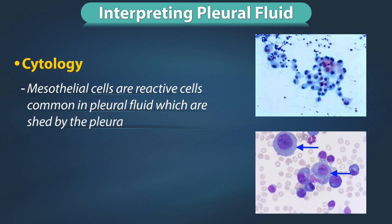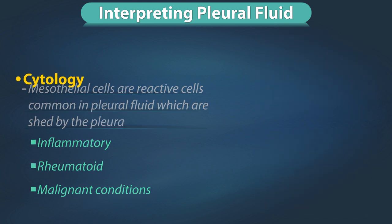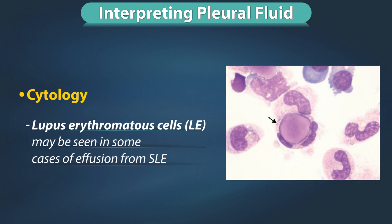RBC count more than 1 lakh per microliter is suggestive of malignancy, trauma, or pulmonary infarct. Cytology: mesothelial cells are reactive cells commonly seen in pleural fluid, shed by the pleura. They are seen in inflammatory, rheumatoid, and malignant conditions. Lupus erythematosus cells or LE cells can be seen in some cases of effusion from systemic lupus erythematosus.